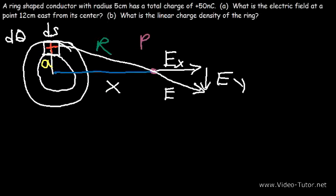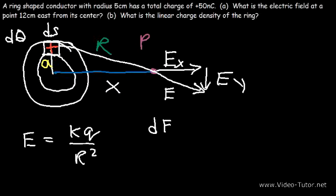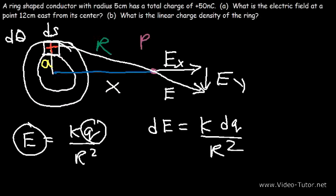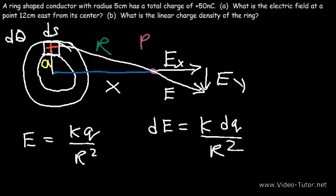The electric field created by a point charge is E = KQ/R². So the electric field created by a small segment — treated as a point charge — is dE = K·dq/R². Just as E is created by charge Q, dE is created by charge dq. dE is simply the small electric field created by a small portion of the total charge of the ring.